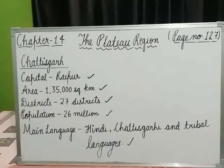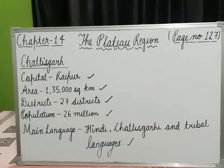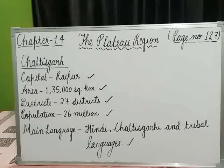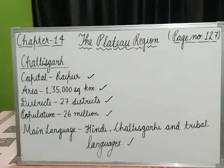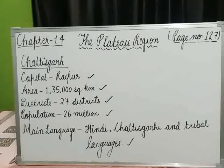Hindi, Chhattisgarhi, and tribal languages such as Halbi and Gondi are spoken here. Common dresses for men are Dhotikurta, Lungikurta, and Pajamakurta. Women wear heavy jewellery and colorful sarees with a silver waistband called Kardhani — the band worn around the waist.